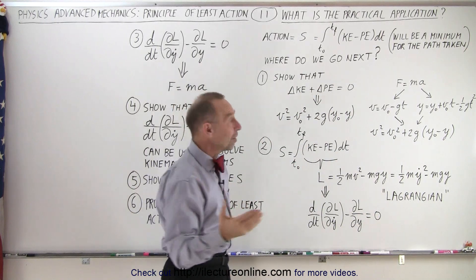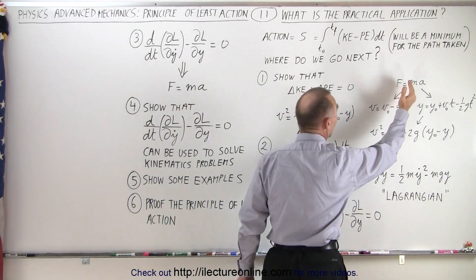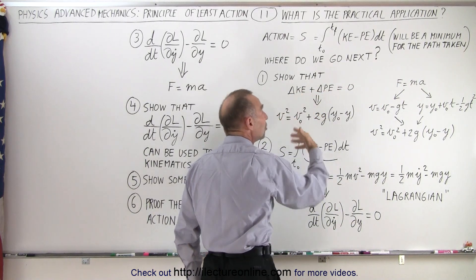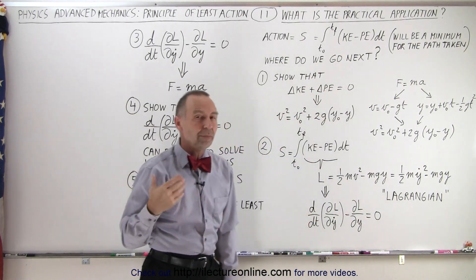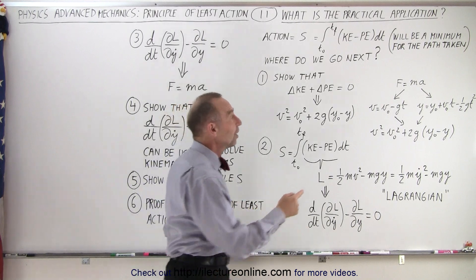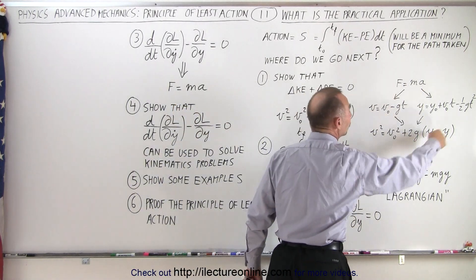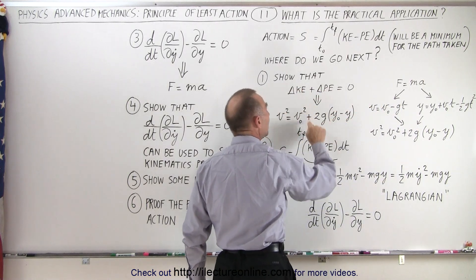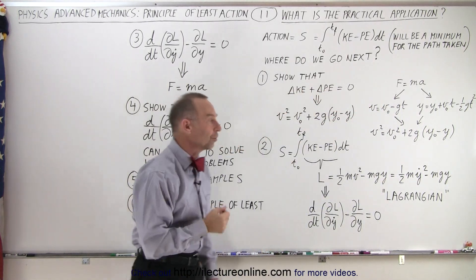So, in other words, we can solve problems by using the equation F equals ma, or we can solve the same problems by using the change in kinetic energy and the change in potential energy. The difference is that here we get information along the path as a function of time, which we don't get when we use the energy equation.